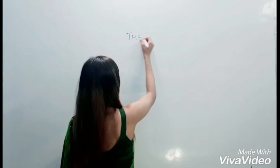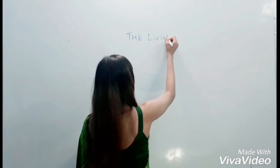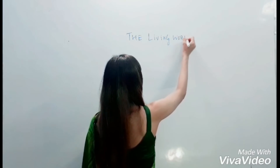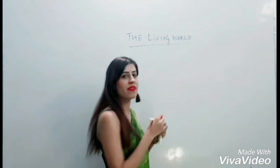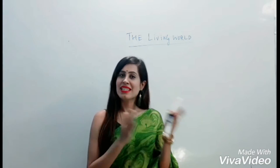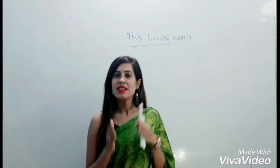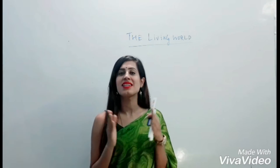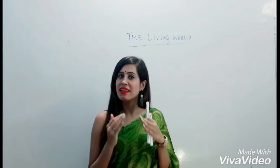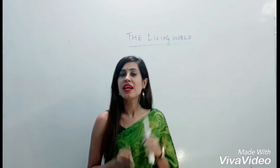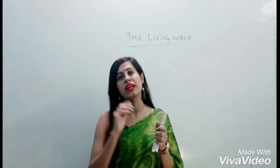Hello students. Today I will be discussing a very important chapter according to the NEET examination — that is the first chapter of 11th standard, the Living World. The Living World chapter has four topics: features of living organisms, taxonomy and systematics, taxonomic hierarchy, and taxonomical aids. In this lecture I will be dealing with the first topic, that is the features of living organisms.